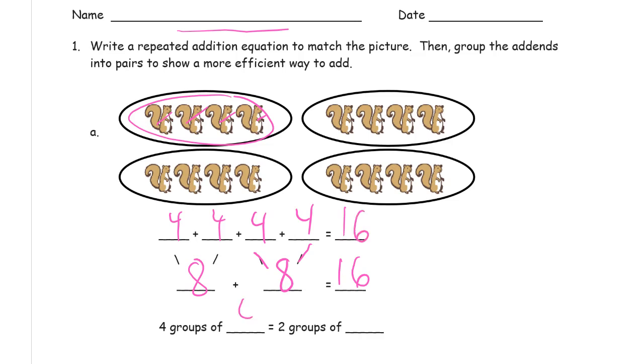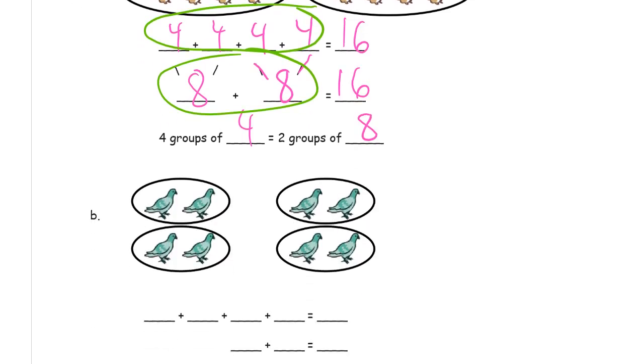So four groups of four is the same as, right? Because this is the idea here that these four groups of four are the same as these two groups of eight. Because they both equal 16.